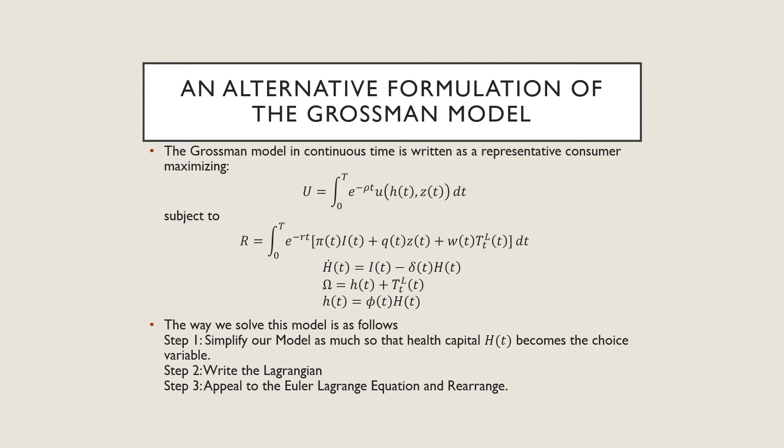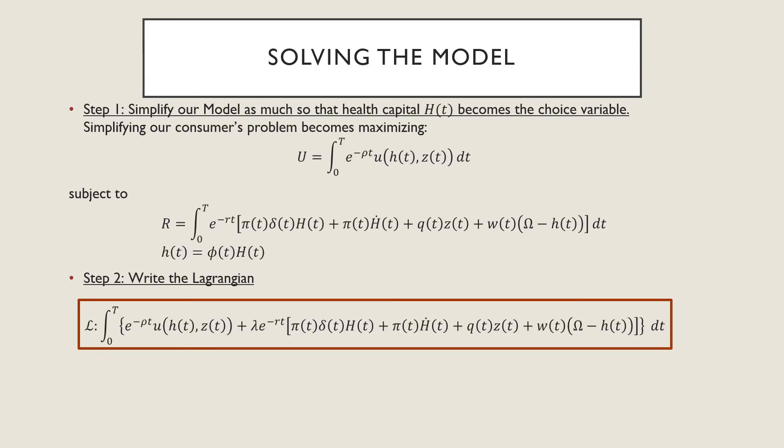We're going to follow three steps. Step one, we're going to simplify our model so that health capital H(t) becomes our choice variable as opposed to health status. We're going to write a Lagrangian, and then we're going to appeal to the Euler-Lagrange equation and rearrange. That's how we're going to get our equilibrium concept.